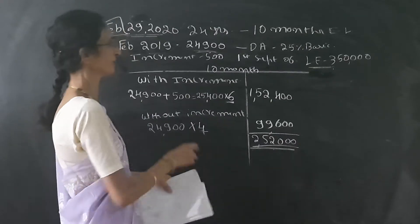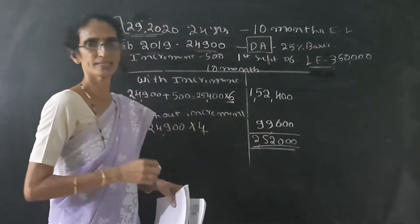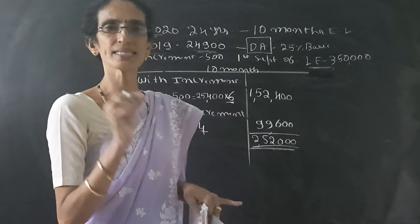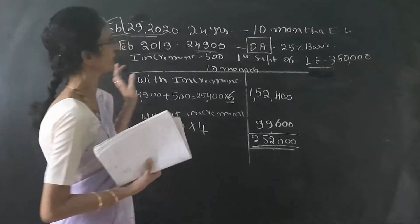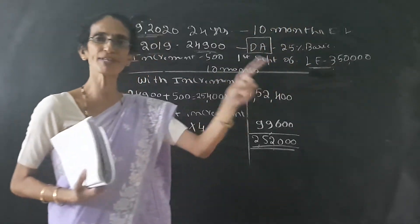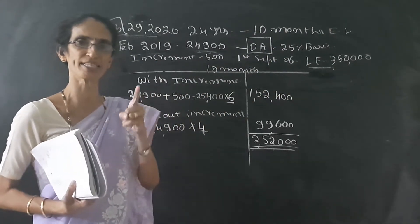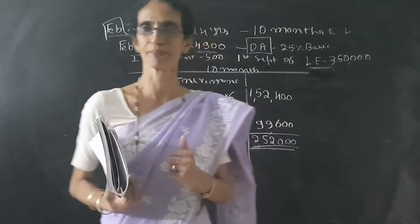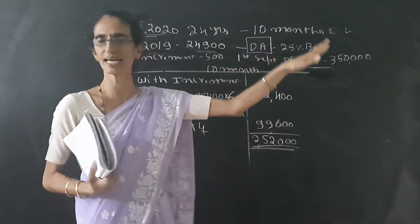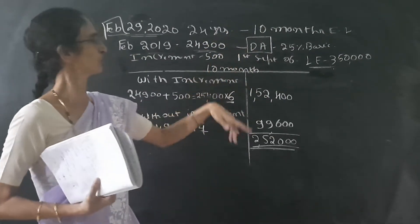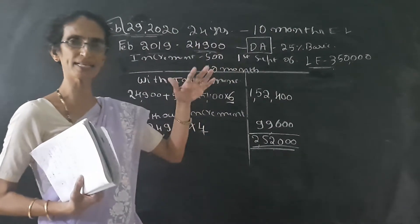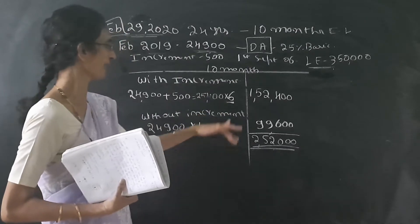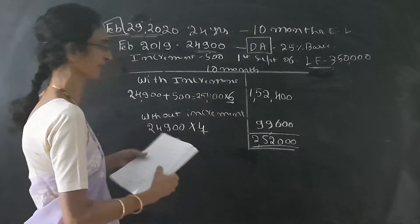We should not add DA here. DA is not taken into consideration because if the problem states DA does not enter into retirement benefit, then for leave encashment, we only include DA in 10 months salary if it enters into retirement benefit. In this case, there is no need to add DA. So 2,52,000 is the 10 months salary.